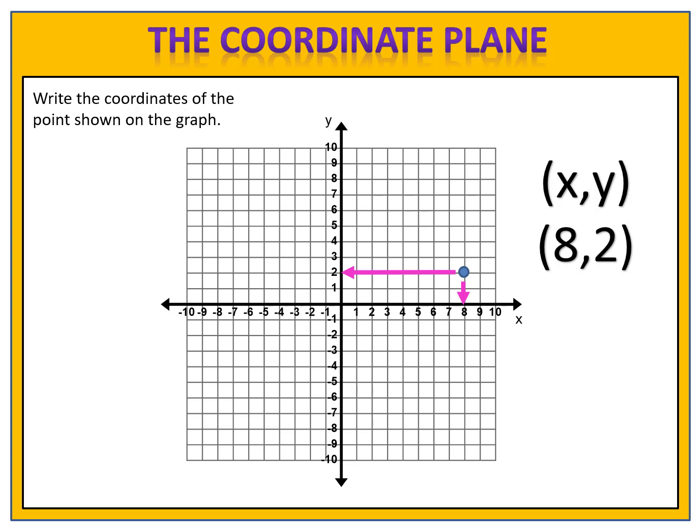Let's try another one. Can you write the coordinates of this point? Please pause the video and come back when you finish. We first look at the x-axis — the point is above the 3, so the x value is 3. Then we look at the y-axis and see that our point is alongside the 6, so the y is 6. Since x is 3 and y is 6, we write this as the ordered pair 3 comma 6. That's the location of the point on the graph.